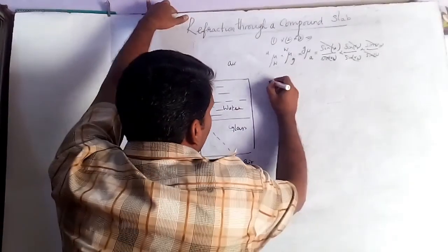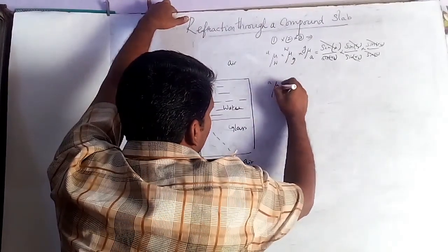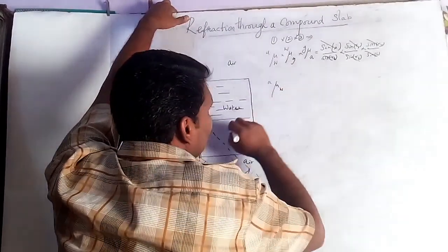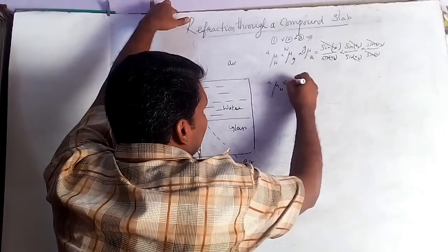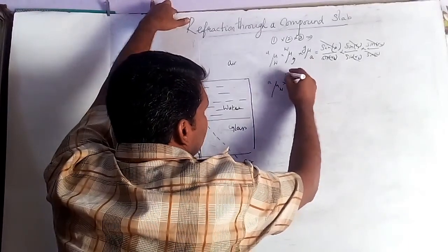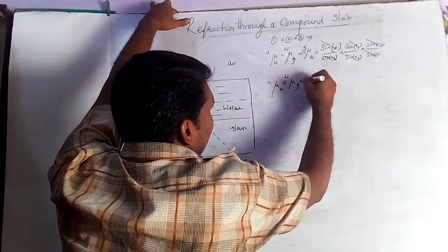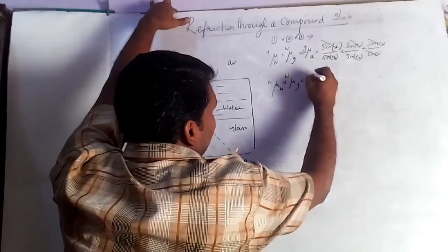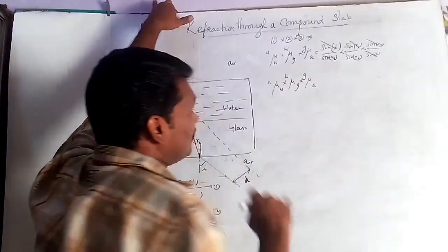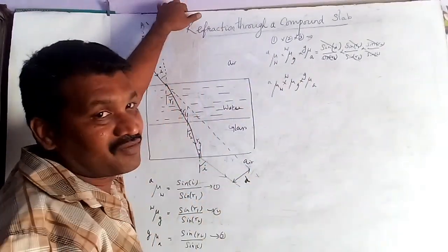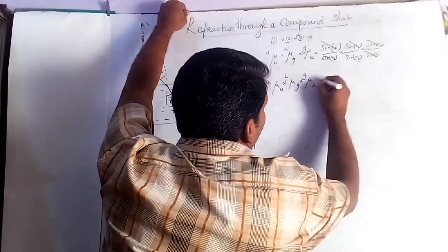So now we get: the refractive index of water with respect to air, multiplied by the refractive index of glass with respect to water, multiplied by the refractive index of air with respect to glass — the multiplication of all three equals 1.